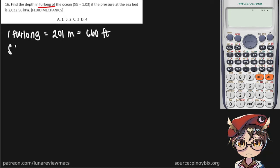We're also given the specific gravity of 1.03. Now this is seawater, so we can simply multiply this by the density of pure water. We end up with the density of 1,030 kilograms per cubic meter. We're also given a pressure of about 2,000 kilopascals.